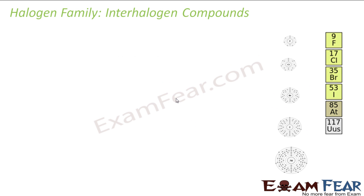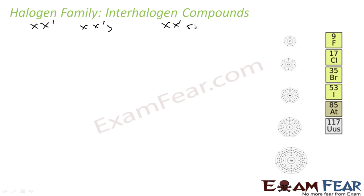We have discussed this when we talked about the reaction of halogen with other halogen. Interhalogen compounds are compounds which have two different halogens - they react with each other to form interhalogen compounds. It has the forms XX', XX'3, XX'5, and XX'7.